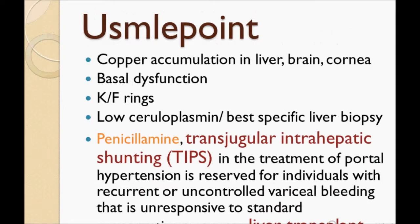Key USMLE points: Wilson's disease is copper accumulation in the liver, brain, and cornea. Look for symptoms due to brain, cornea, and liver involvement — including basal ganglia dysfunction. Low ceruloplasmin is the best blood test; liver biopsy is the most specific gold standard test.